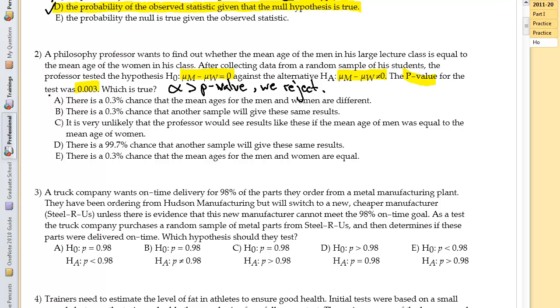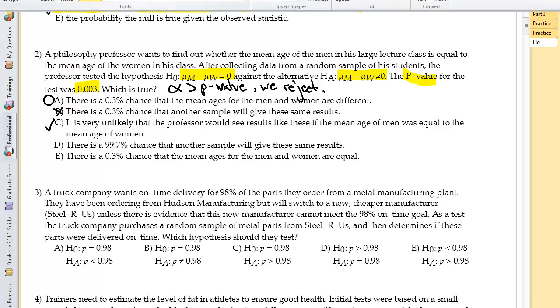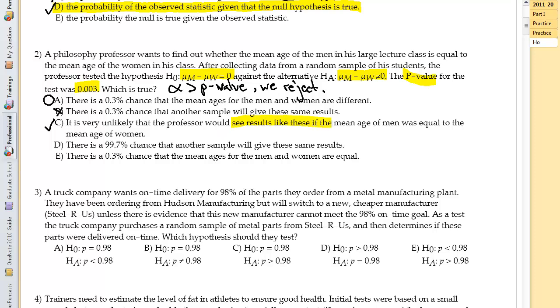So there is a 0.03% chance that the mean ages of men and women are different. This doesn't seem very, this isn't really what this means right here. There is a 0.03% chance that another sample will give the same results. No, it's really about how another sample is this far away or further, right? So other samples can be much, much closer. It is very unlikely that the professor would see results like this if the mean age of men and women was equal. Yes. This is kind of like a rejection of the null hypothesis in favor of the alternative hypothesis. Remember, a p-value is the idea that you would see this result if the null hypothesis was true. And this is the null hypothesis right here. And so you have a very low percentage, 0.003, that the professor would see results like this if the mean age. And so this is a good one.